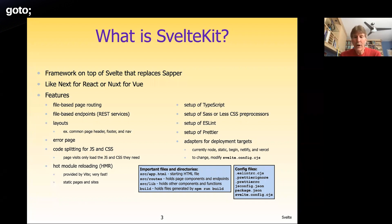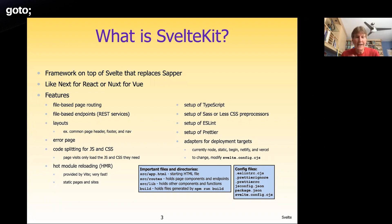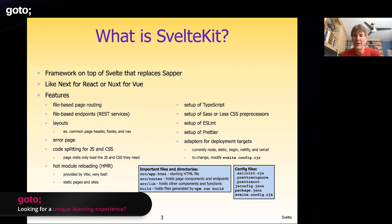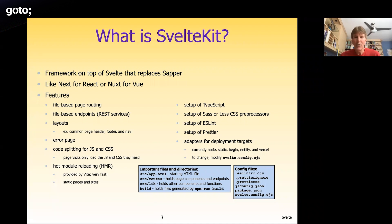With most frameworks, you bundle everything into one ball of JavaScript that downloads before the app begins. With code splitting, when you hit the first page, you only download the JavaScript and CSS needed for that page. When you visit the next page, it downloads what's needed for that one. The whole experience is faster because users only pull down the parts they actually need. SvelteKit also provides hot module reloading, which is great for iterative development — when you save a change to a component, it only needs to compile that component and reload its JavaScript, without rebundling the whole application.